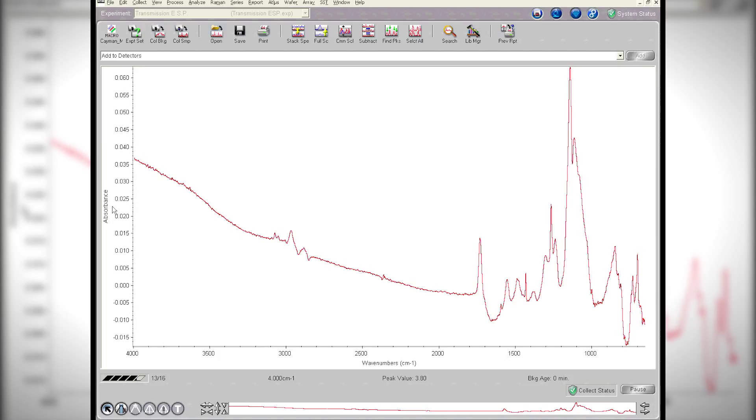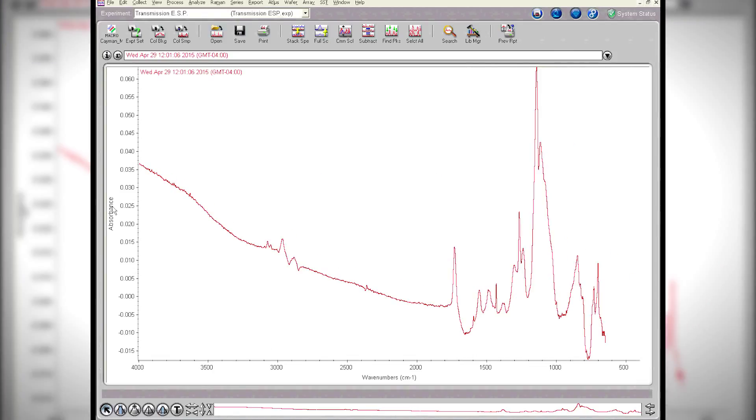We're only collecting 16 scans. A lot of times when you're looking at these very thin films, you'll collect like 256 scans or something like that in order to get the signal-to-noise good to see the very thin films. In this case, 16 is plenty good.